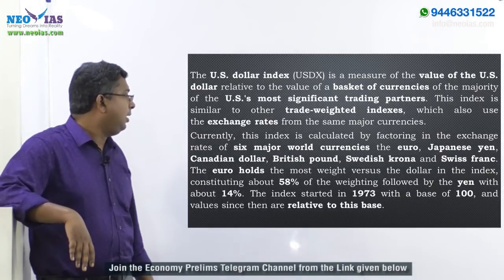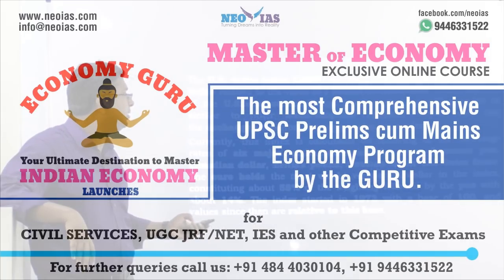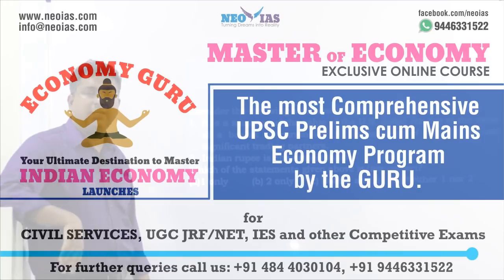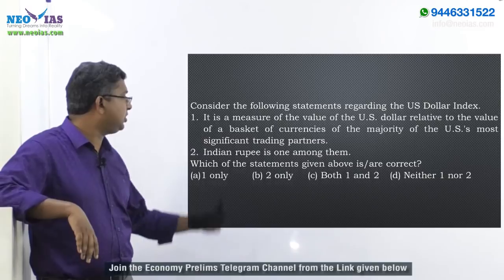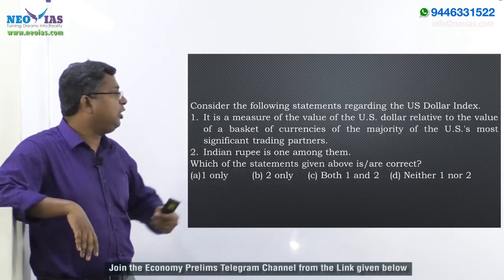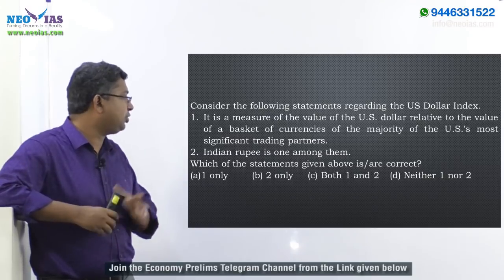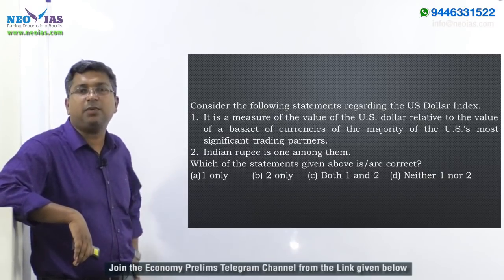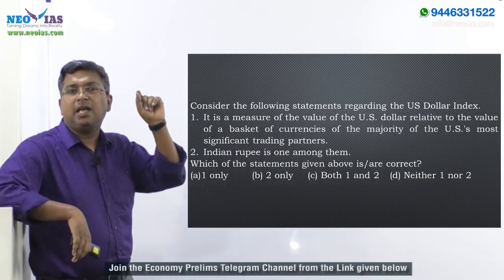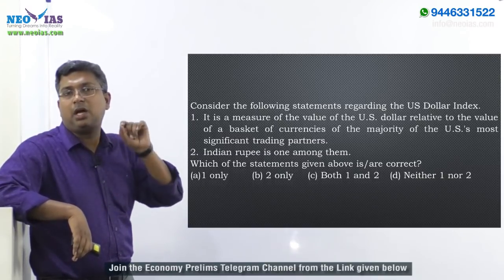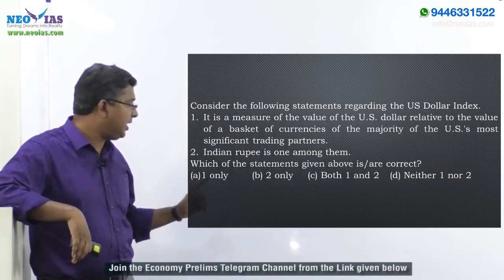Regarding the two-statement question: the first statement is correct because the US dollar index is indeed a measure of the value of the US dollar in relation to a basket of currencies of the US's most significant trading partners. The second statement — that the Indian rupee is one among them — is incorrect, as the rupee is not among the six currencies in the US dollar index. So the answer is statement one only.